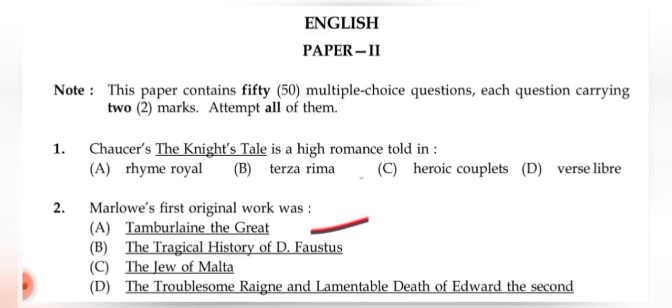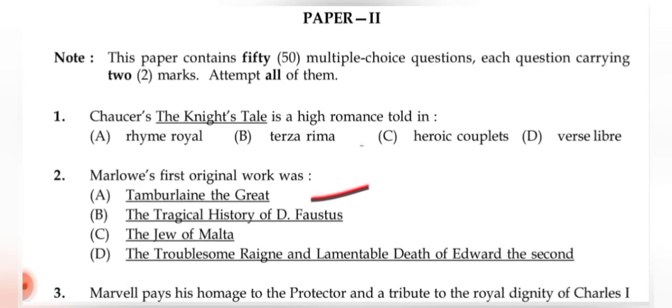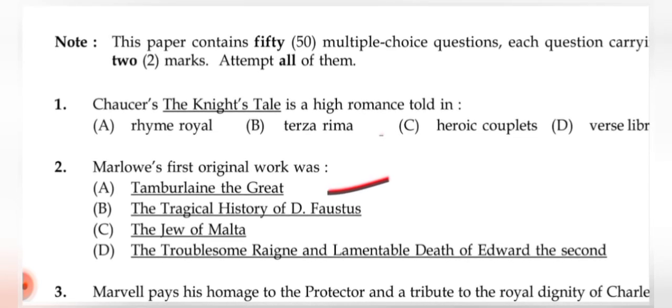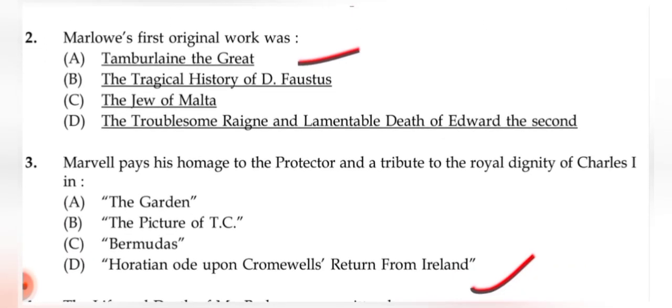Question 2: Marlowe's first original work was — the correct answer is (A) 'Tamburlaine the Great.' Question 3: Marvel pays homage to the Protector and a tribute to the royal dignity of Charles I in which poem? Options include 'The Garden,' 'The Picture of T.C.,' 'Bermudas,' and 'Horatian Ode upon Cromwell's Return from Ireland.' The correct answer is (D) 'Horatian Ode upon Cromwell's Return from Ireland.'